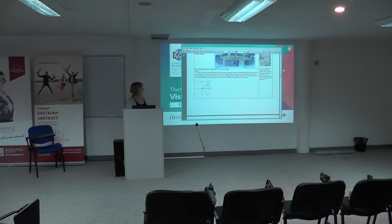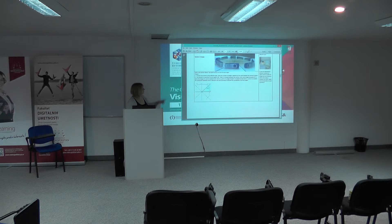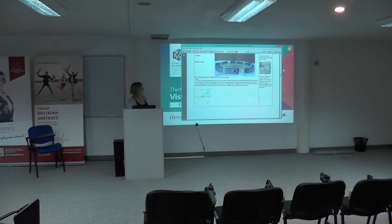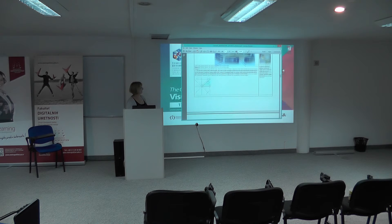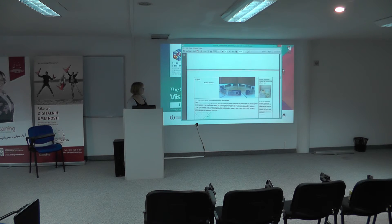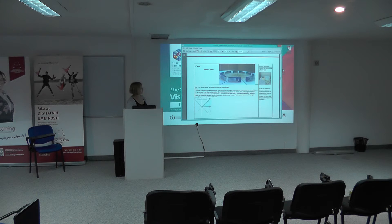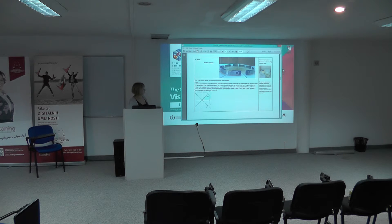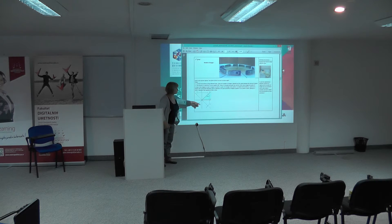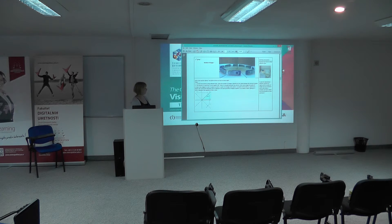The fifth group also dealt with the number of images — almost the same picture as the fourth group. The first task is the same, but the second task is different: they have to come to the conclusion that all the images and the given point A belong to the same circle, and they have to find the equation of that circle.